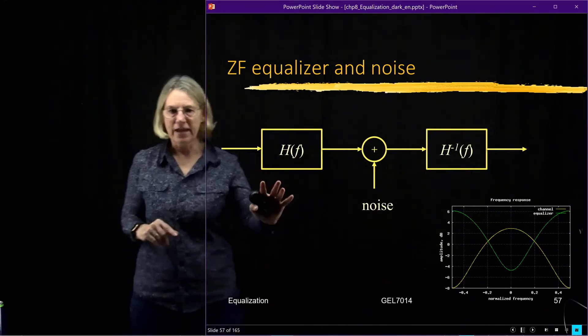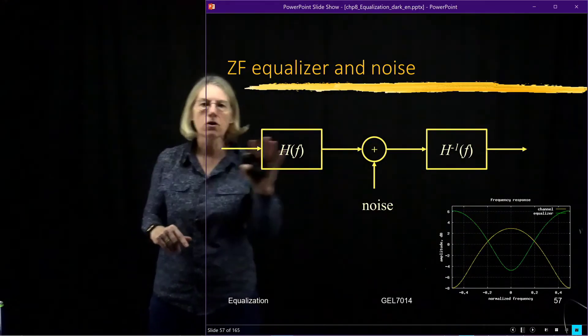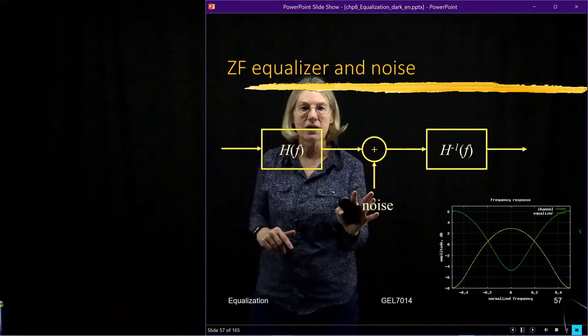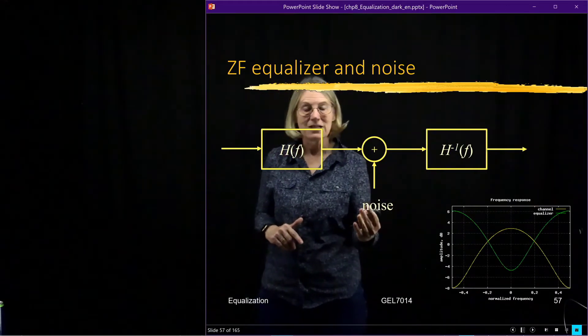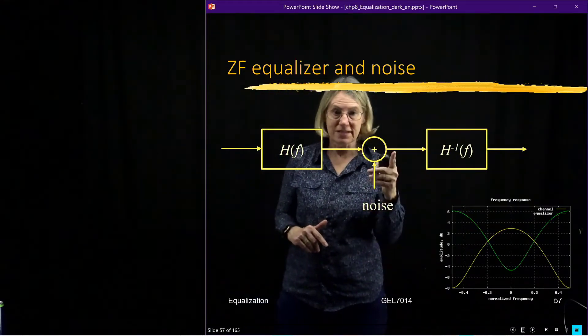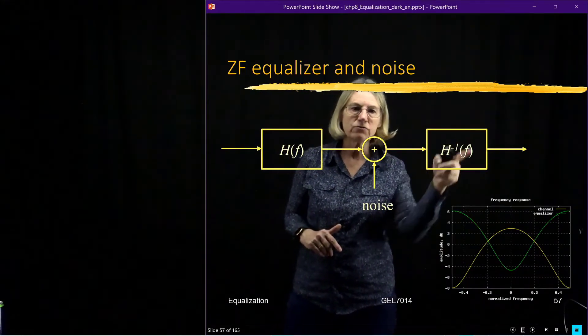Remember here is my channel H of f. I transmit my signal, it gets transmitted, goes through the channel, I arrive at my electronic receiver. My electronic receiver has thermal noise because it's got electronics in it, so it's got noise added to the signal. Of course this introduced ISI, so now I try to find the inverse of that channel.